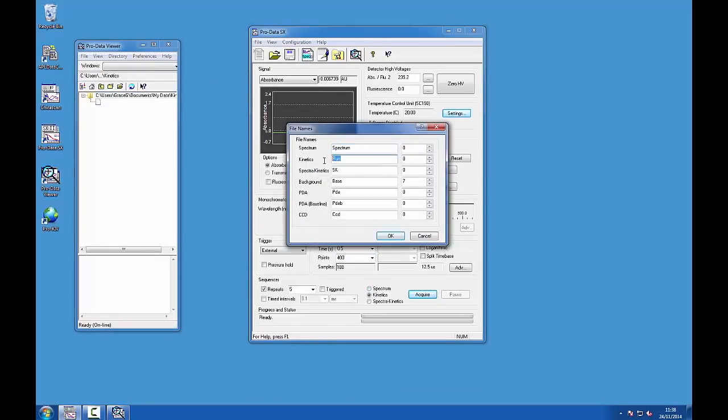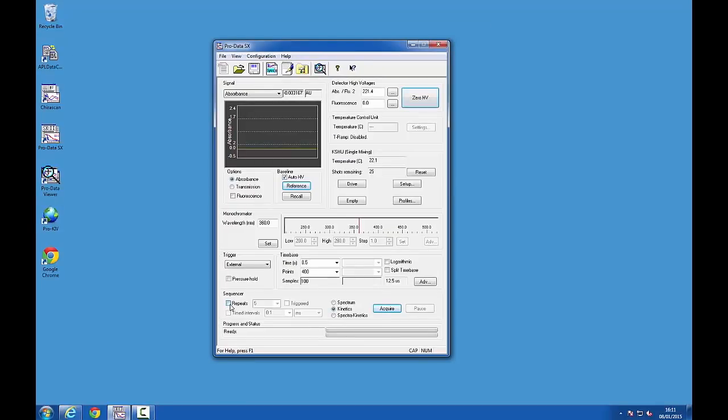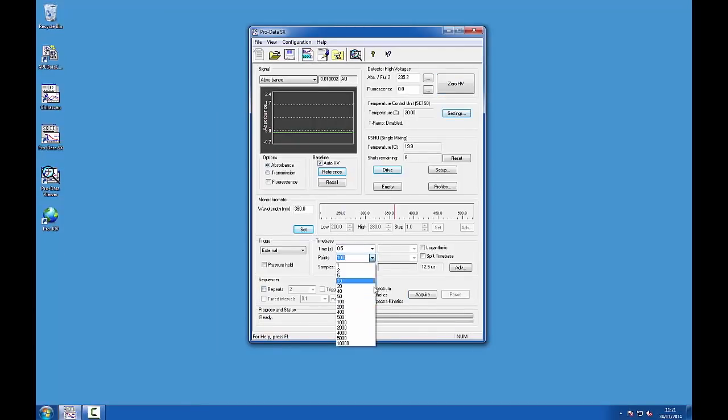Enter a name for your results file in the file names dialog window. If you want to measure repeat drives, set the number of repeats to your desired value. The number of points should normally be set to a value between 400 and 1000.